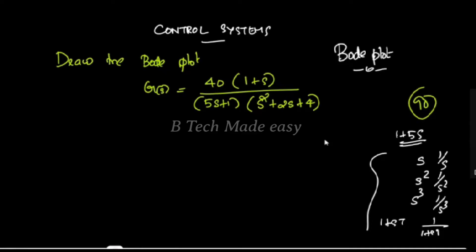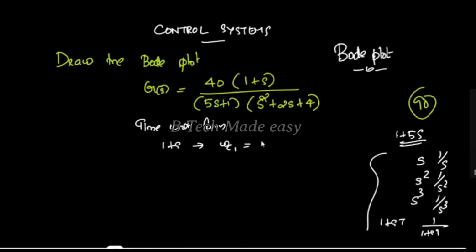In the second case, we can identify the time constant form. First, we identify the time constant form, then we find the corner frequencies. The corner frequency of (1 + s) is ωc1 = 1/T, which equals 1.